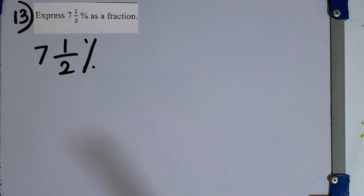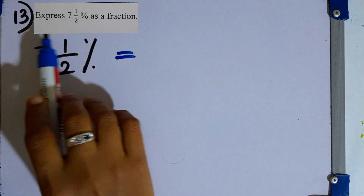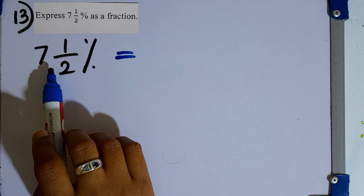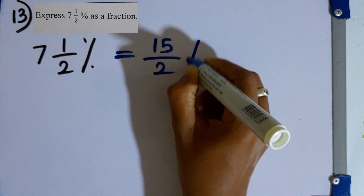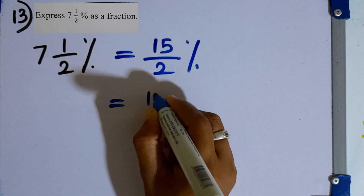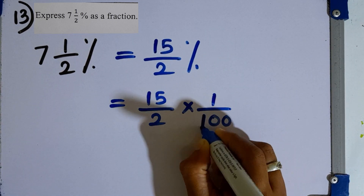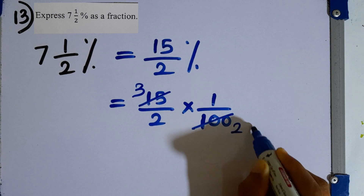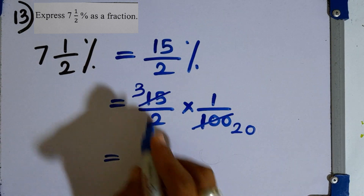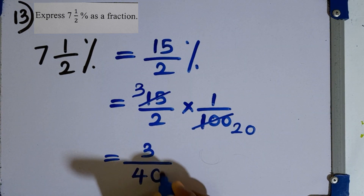Question number 13. Express 7 and a half percent as a fraction. First, convert the mixed number to an improper fraction: 15 over 2 percent. Then remove the percentage sign, replacing it with the fraction 1 over 100. Simplifying: 3 times 1 over 20 times 2, giving 3 over 40 as the fraction.